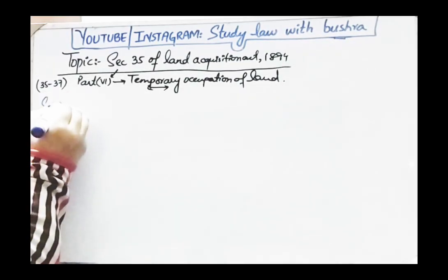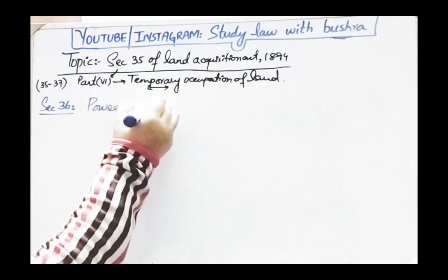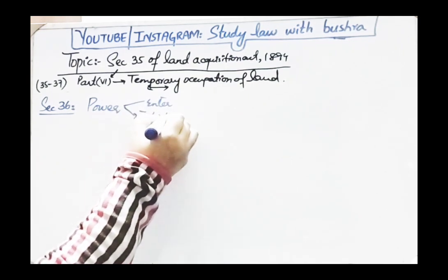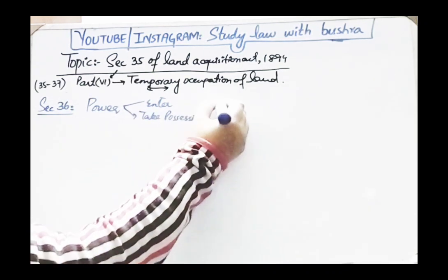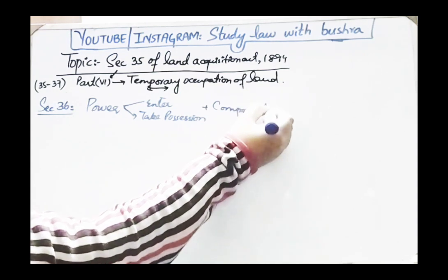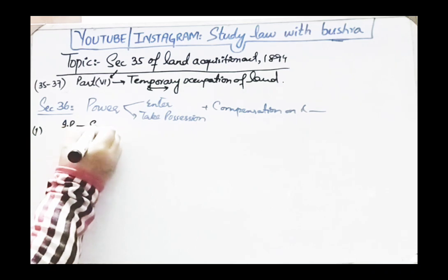Section 36 covers three things, as indicated in its title: 'Power to Enter and Take Possession, and Compensation on Restoration.' The first concerns the powers to enter upon land; the second concerns restoration; and Clause 1 states: 'On payment of such compensation or on executing such agreement or on making a reference under Section 35, the Collector may enter upon and take possession of the land and use or permit the use thereof in accordance with the terms of the notice.'